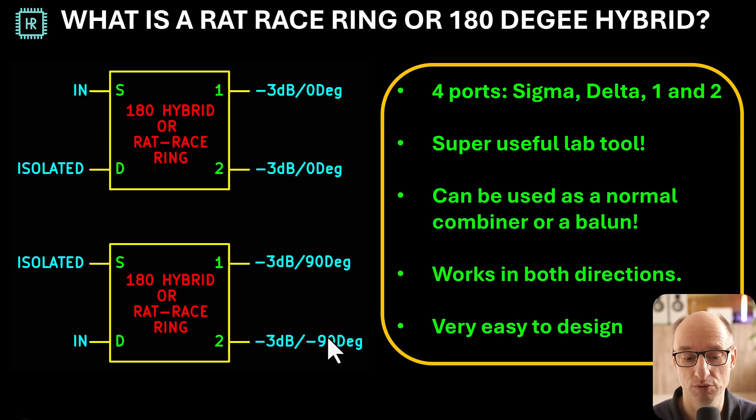They work in both directions, so if you have a balanced signal somewhere, then you can put the balanced signal into port 1 and 2 and you get your single ended signal out of the delta port, which is very handy. Or if you just want to combine two signals in phase, you can use the sigma mode: put the signals on port 1 and 2 and get the combined signal at the input port.